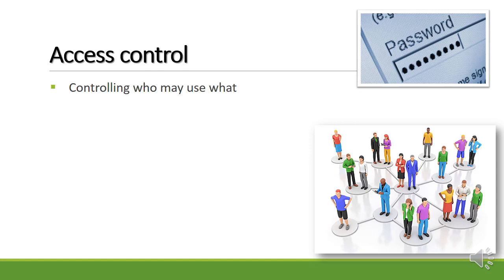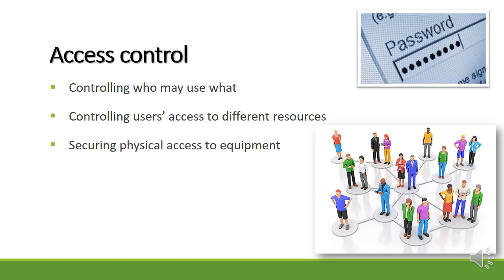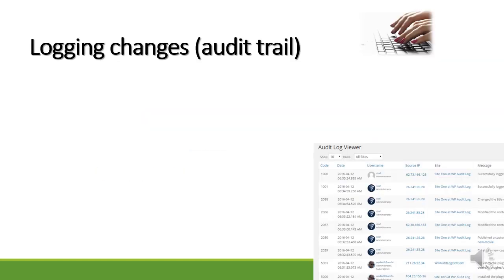Access control in a network is when we control who may use what. We control the user's access to different resources, we secure the physical access to equipment, and we have good password policies so that the data is kept secure.